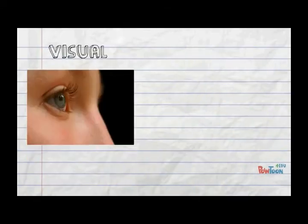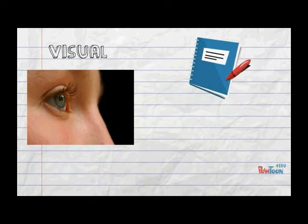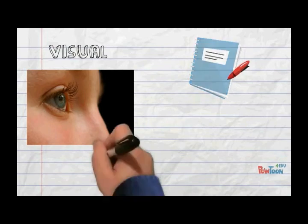Visual learners come in two types. One type prefers learning through written language, so they do best with reading and writing tasks. For example, they need to write down directions when they are going somewhere unfamiliar.